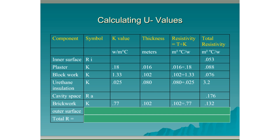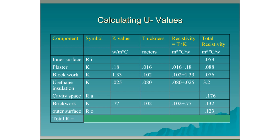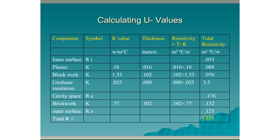The brick work has K value 0.77 — more resistance than the block work, but less than the insulation. Its thickness is 0.102 m (102 mm): 0.102 ÷ 0.77 = 0.132. Finally, the outer surface has a resistance of 0.123. Adding all values together gives a total resistivity of 3.855, so R = 3.855.